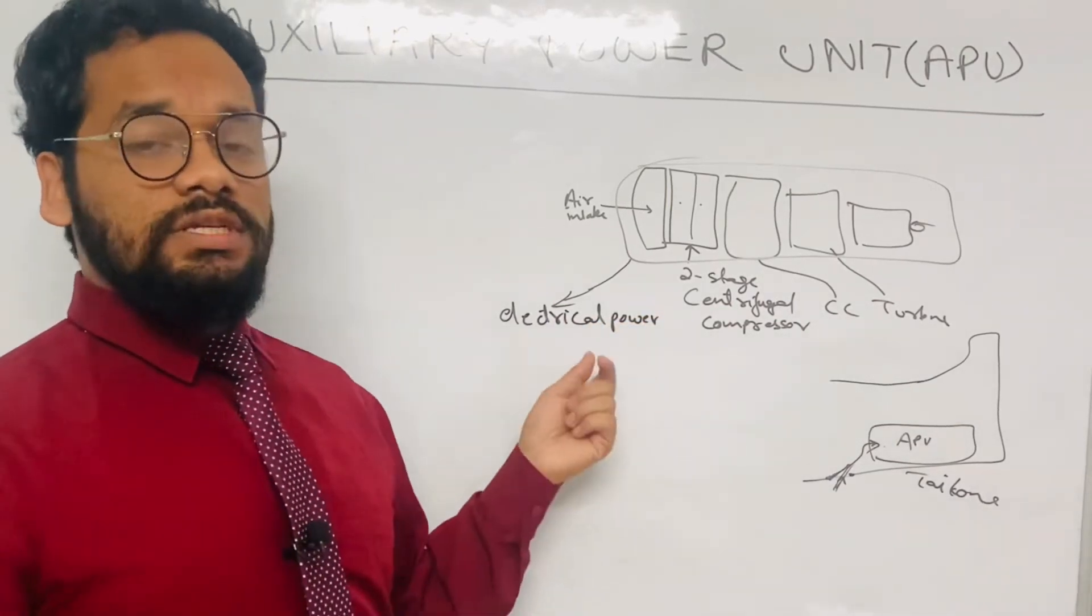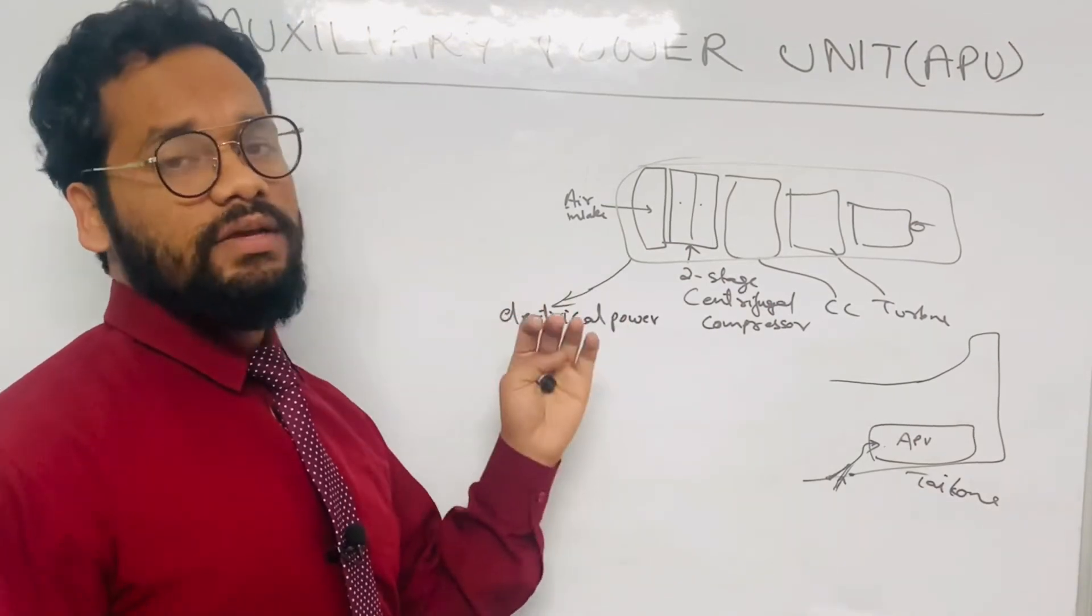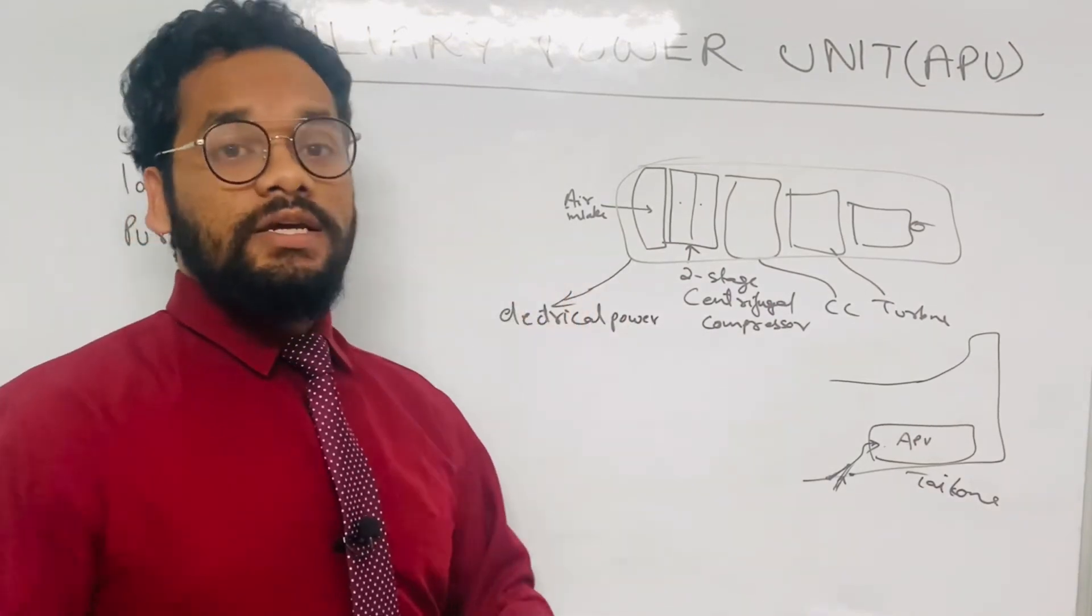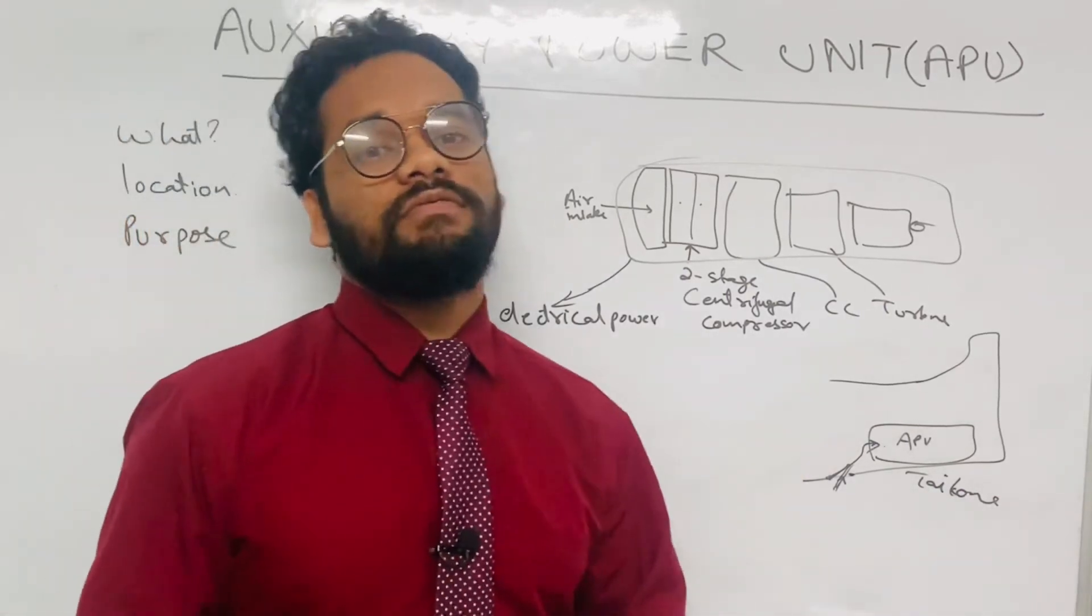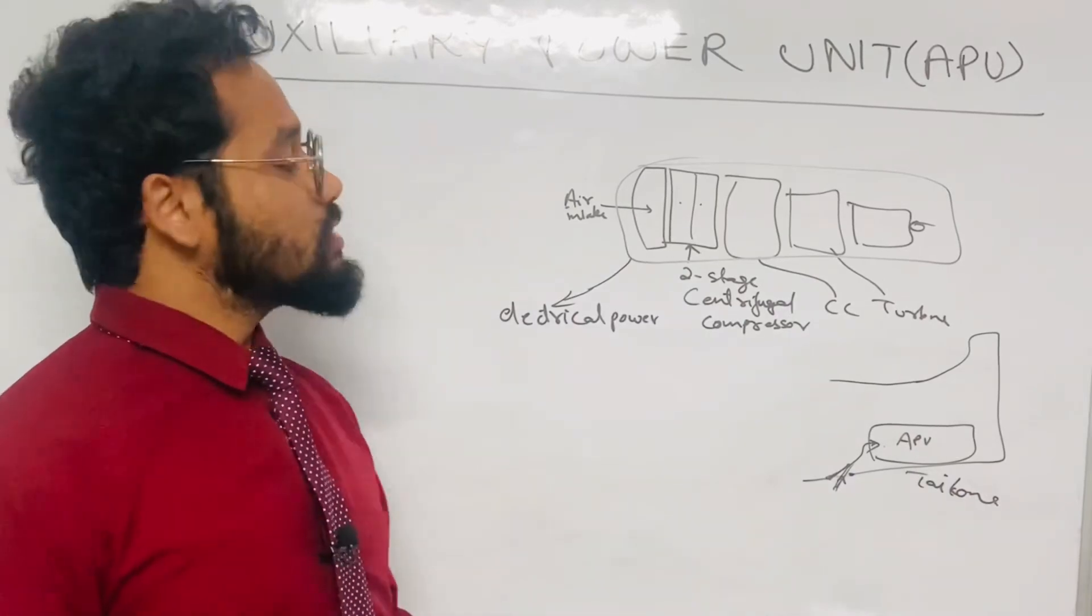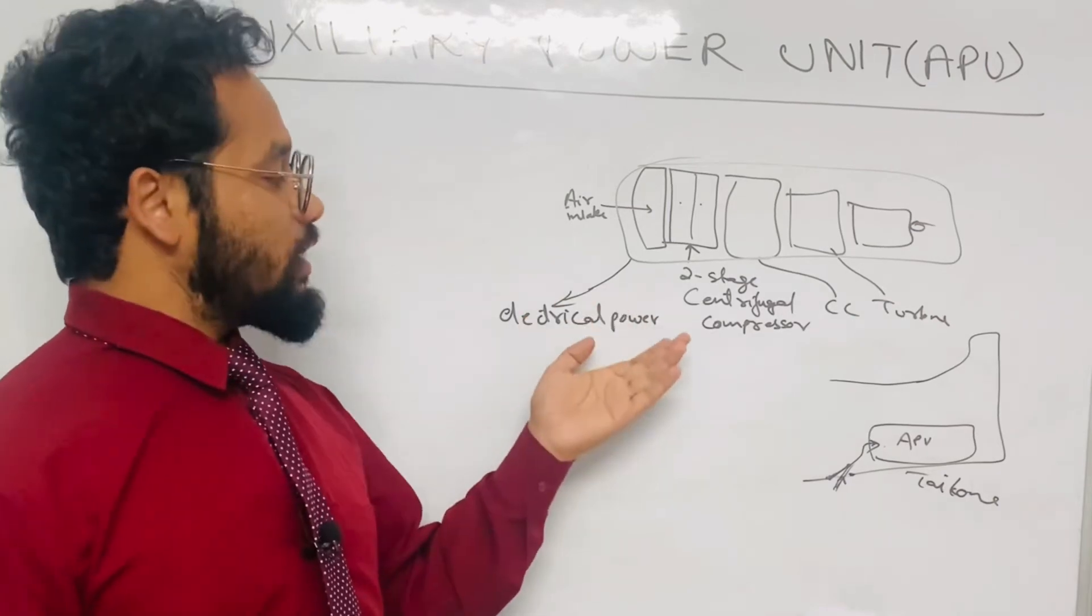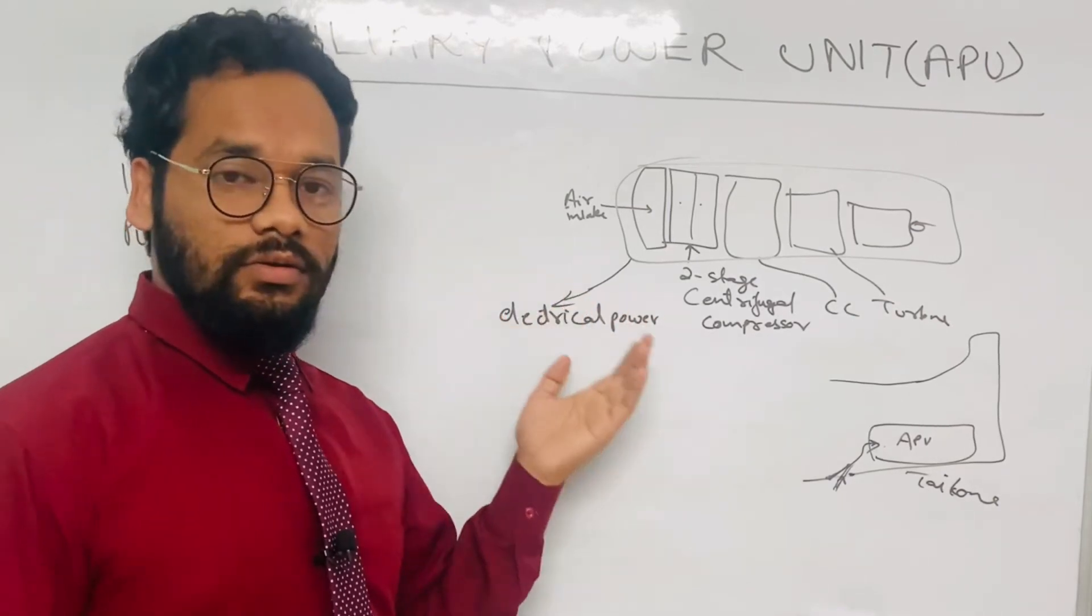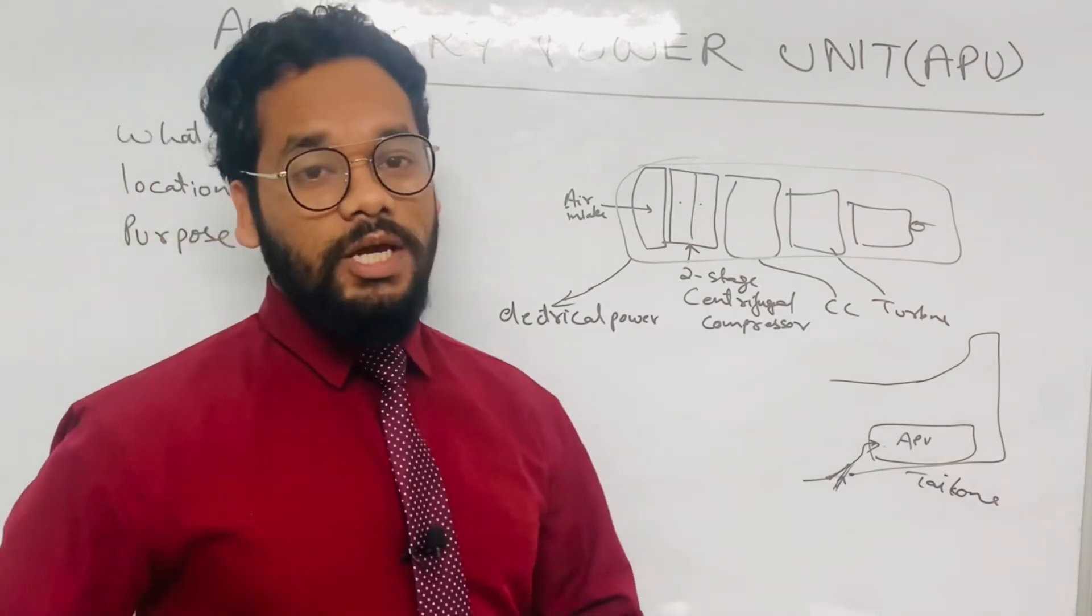This electrical power can be used on the ground in some airplanes and also it can be used in the flight if APU is being used in flight. In some four engine airplanes the APU is not certified for use in flight. And if I talk about the extended range engine operations aircraft, in those planes the APU is used for providing electrical, pneumatic, and hydraulic pressure as well. It depends on the type of aircraft.